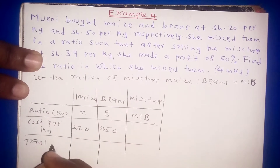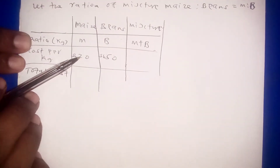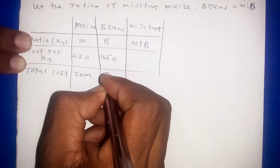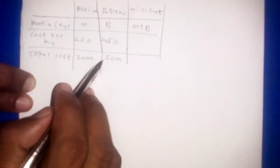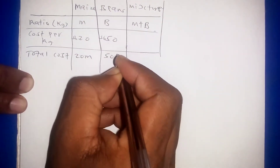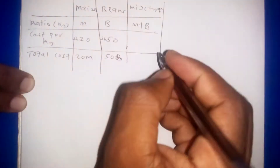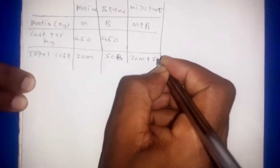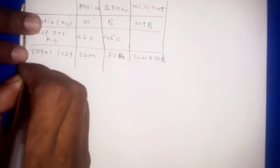For total cost: mass M times 20 gives 20M, and for beans it is B times 50 giving 50B. So the total cost of the mixture is 20M plus 50B.